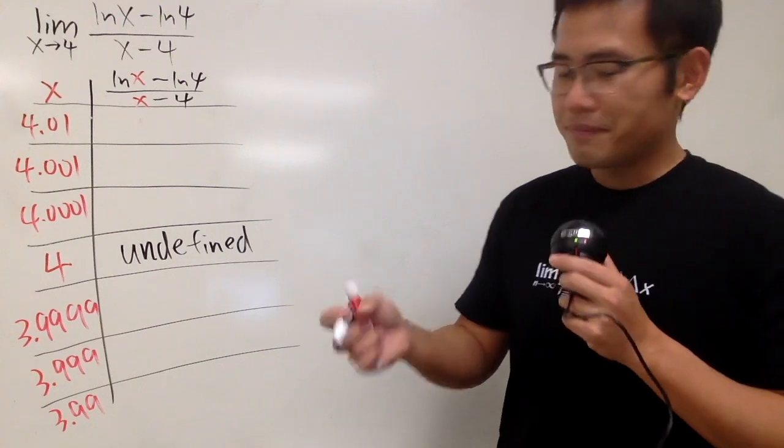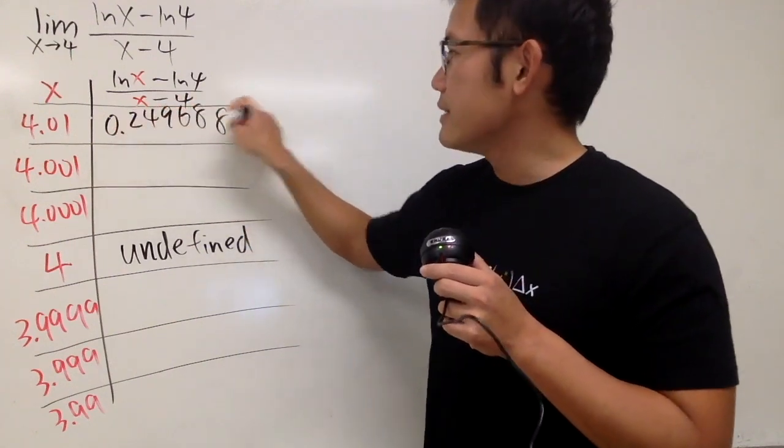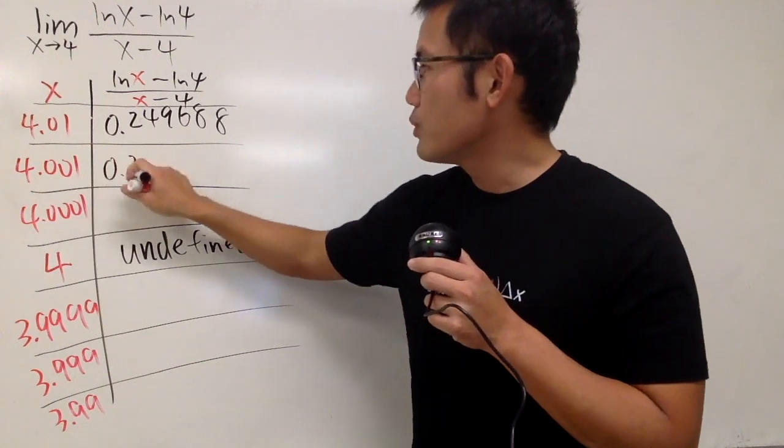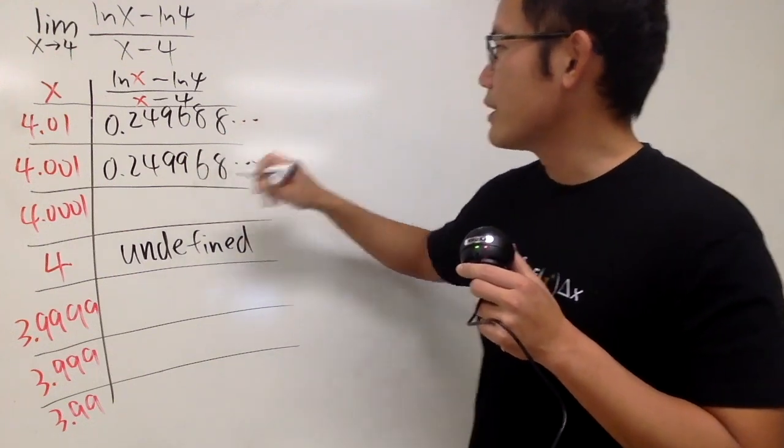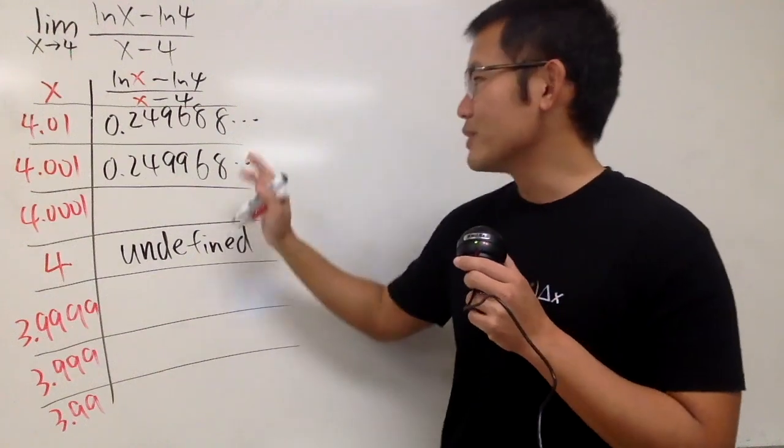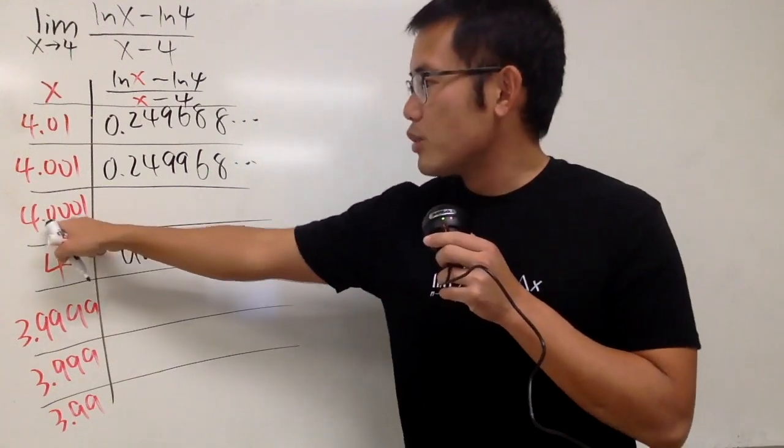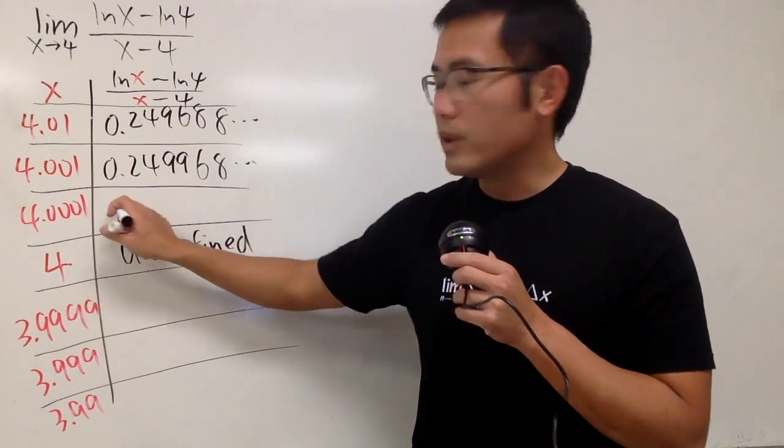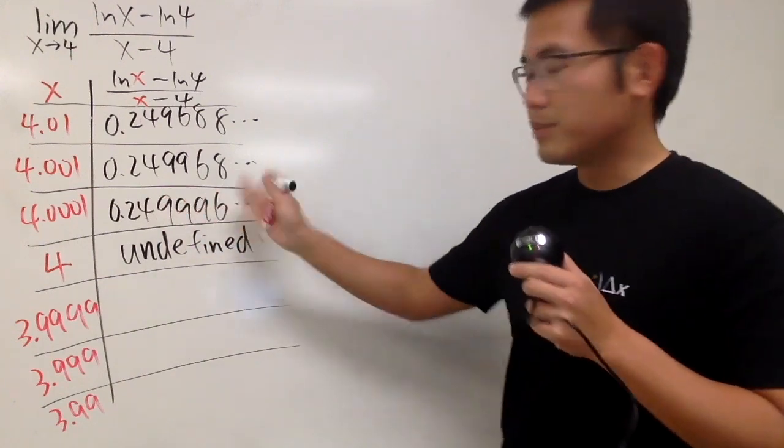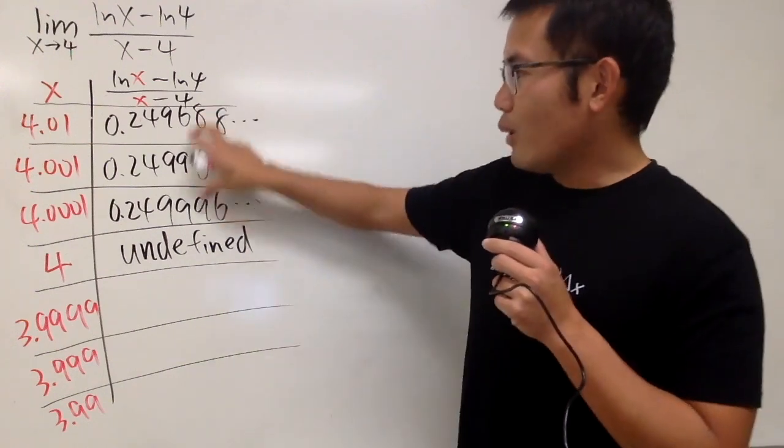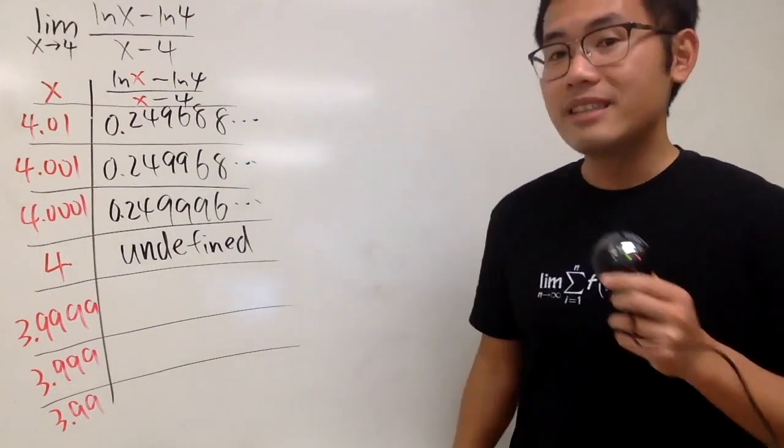I'm just going to write down the values that I have on the screen. For this right here, we get 0.249688, and then for the next one, we get 0.249968. I'm just writing down the first six digits. And when x is 4.0001, we actually end up with 0.249996. Notice that all these numbers are approaching very close to 0.25.